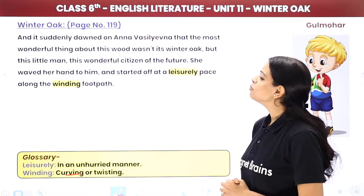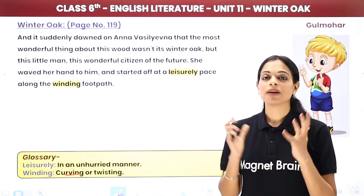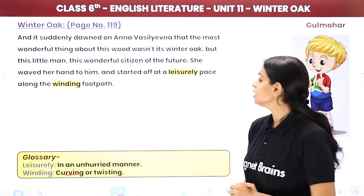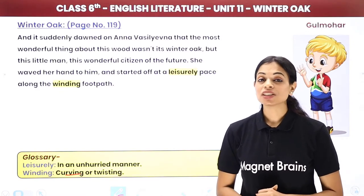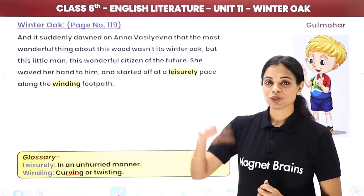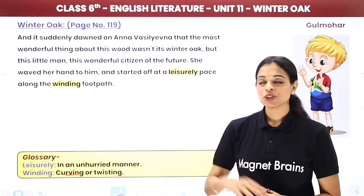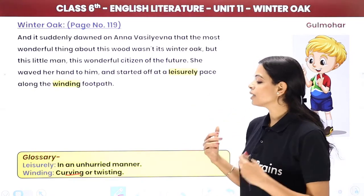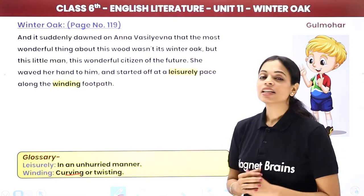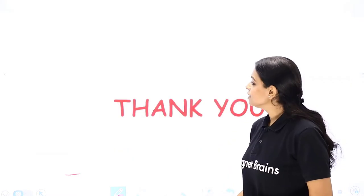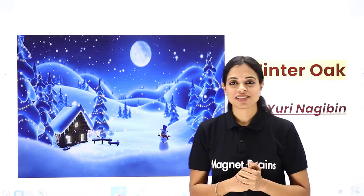Having walked off a bit, Anna Vasilyevna turned round to look at the oak — rosy white in the rays of the setting sun. She saw a dark little figure at its foot. Savushkin had not left — he was holding guard over his teacher from afar. It suddenly dawned on Anna that the most wonderful thing about this wood wasn't its winter oak, but this little man — this wonderful citizen of the future. She waved her hand to him and started off at a leisurely pace along the winding footpath. That's the end of the story — now let's move to the summary.